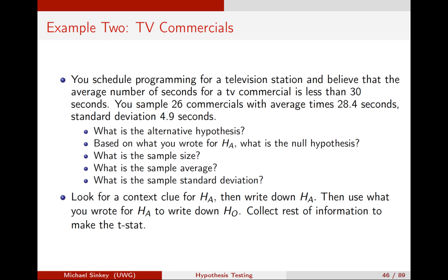Let's look at another example associated with TV commercials. Suppose you schedule programming for a TV station and you believe that the average number of seconds for a TV commercial is less than 30 seconds. You sample 26 commercials with average times of 28.4 seconds and a standard deviation of 4.9 seconds. We have to look for a context clue for the alternative first, then write it down, and use what we wrote for the alternative to write down the null. This is going to determine our critical values, so it's important.